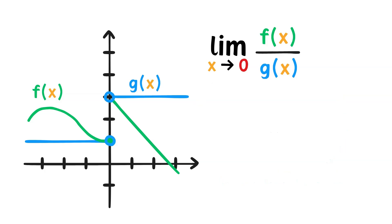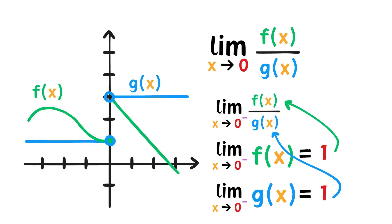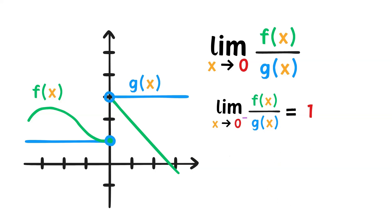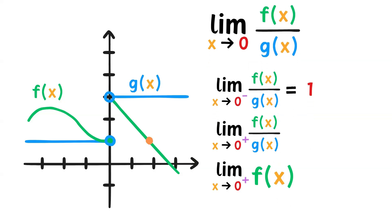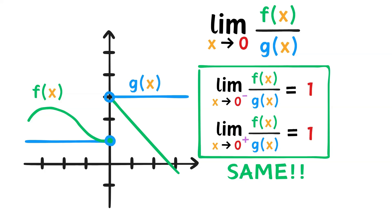Alright, now let's see the limit of the quotient of functions at work. What is the limit as x approaches 0 of f of x over g of x? We know that we must take the one-sided limits. Starting from the left, the limit of f of x as x approaches 0 is 1. The limit of g of x from the left is also 1. So the limit of f of x over g of x from the left is 1 over 1, or 1. Now, what are the limits from the right? The limit of f of x as x approaches 0 from the right is 3. The limit of g of x from the right is also 3. 3 over 3 is 1. The one-sided limits of f of x over g of x are both 1, so 1 is the overall limit.